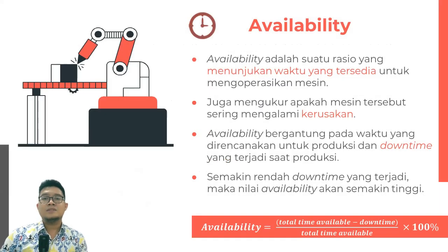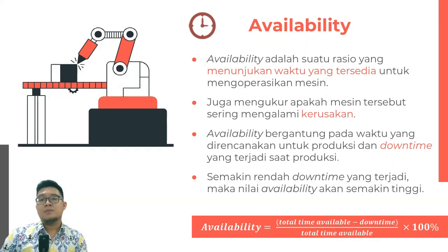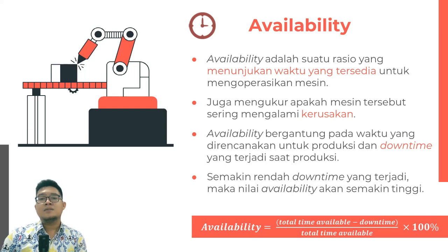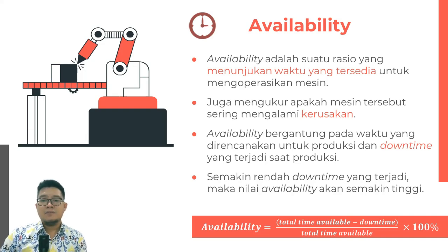Availability adalah suatu rasio yang menunjukkan waktu yang tersedia untuk mengoperasikan mesin. Availability juga mengukur apakah mesin tersebut sering mengalami kerusakan. Availability bergantung pada waktu yang direncanakan untuk produksi dan downtime yang terjadi saat produksi. Semakin rendah nilai downtime, maka nilai availability akan semakin tinggi. Availability dapat kita hitung dengan mengurangi waktu yang tersedia dikurangi downtime, dan dibagi dengan total waktu yang tersedia dikali 100%.